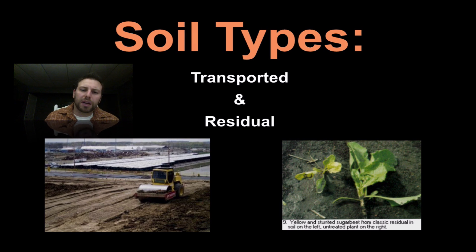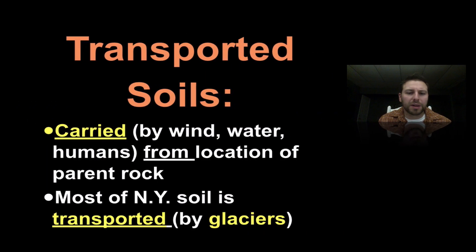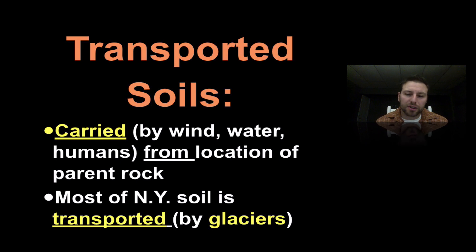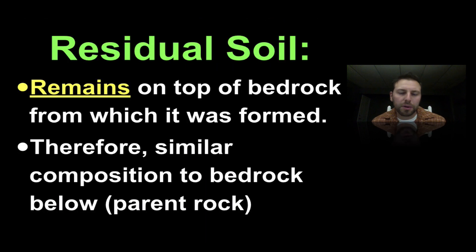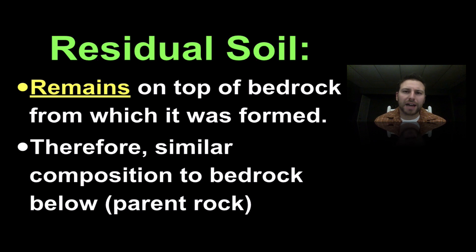There are two major types of soil: transported and residual — the names give their meaning away. Transported soils are soils that have been carried by wind or water from the location of the parent rock, meaning it weathered, broke down, and then something moved it. Most of New York's soils are actually transported soil brought by glaciers. Residual soils are where bedrock breaks down, sediments pile up on top, and stay there — residual soils have the same composition as the bedrock or parent rock below from which the material weathered.